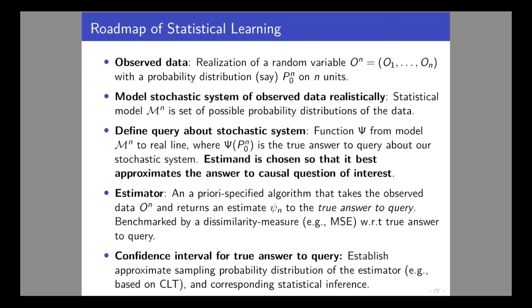At that point, it becomes a pure statistical estimation problem, and you can ignore the causal modeling and identification for now — these non-testable assumptions required for causal identification are a completely separate matter. Then we need an estimator: a mapping from the data into a number, which must be an a priori specified algorithm. Why a priori specified? Because then we can understand the sampling distribution — we can bootstrap or use theoretical methods to establish the stochastic behavior of the estimator, such as consistency and asymptotic normality.